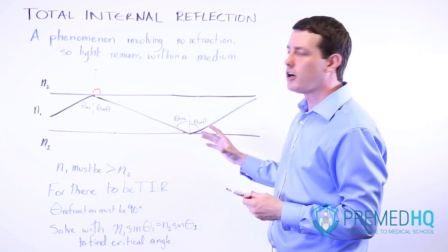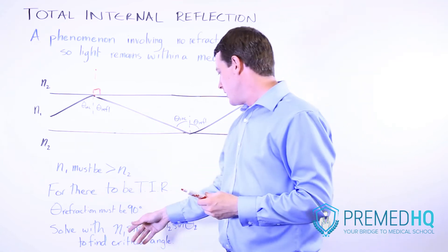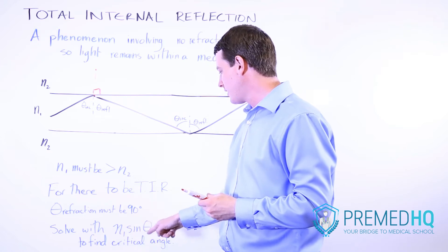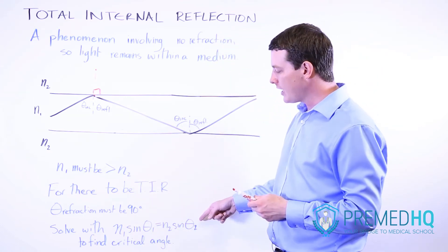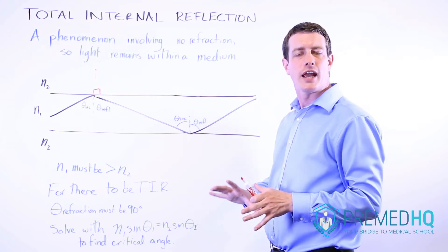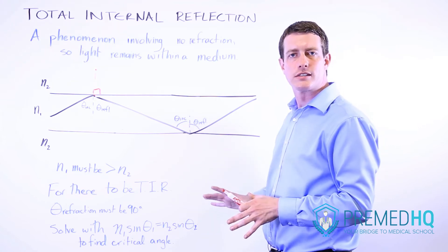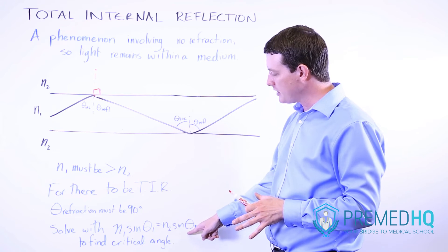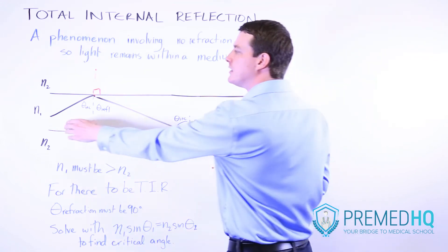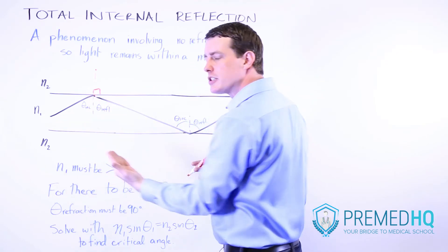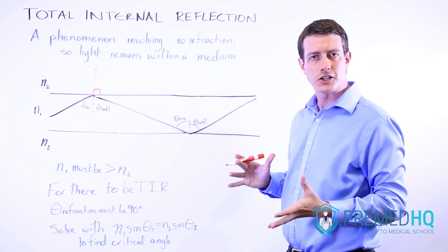Then what you do is solve using Snell's law, which is that N1 sine theta 1 equals N2 sine theta 2. And you set sine theta 2, or whatever the angle of refraction is, to 90 degrees. So this will be 90 degrees for theta 2. And then you can solve for whatever angle of incidence you need in order to first see total internal reflection.